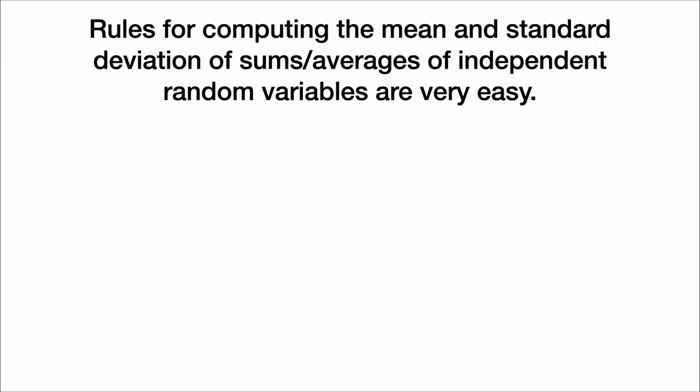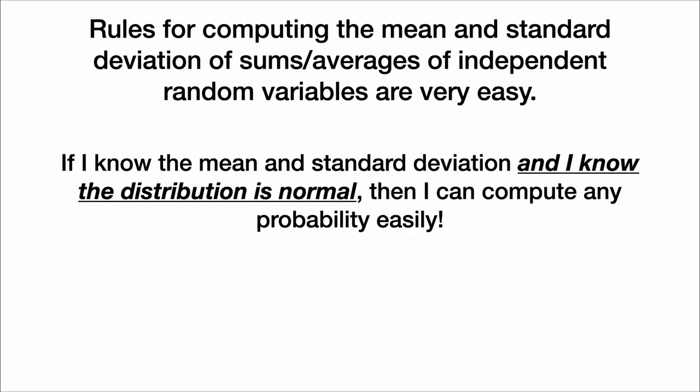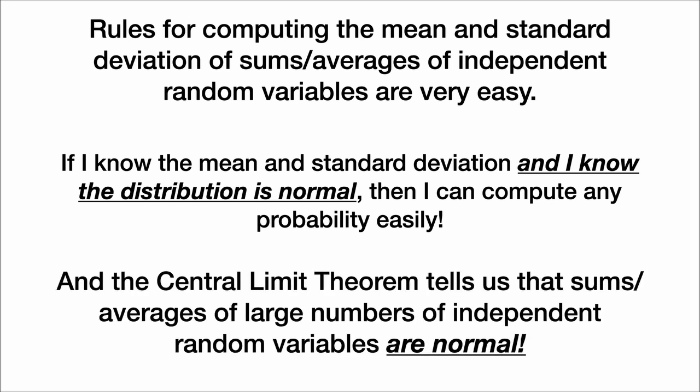Rules for computing the mean and standard deviation of sums or averages of independent random variables are very easy. And if I know the mean and the standard deviation, and I know the distribution is normal, then I can compute any probability easily. And the central limit theorem tells us that sums and averages of large numbers of independent random variables are normal, which makes their probabilities easy to compute, which is the basis of a large portion of the field of statistics.